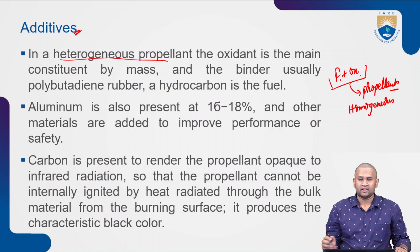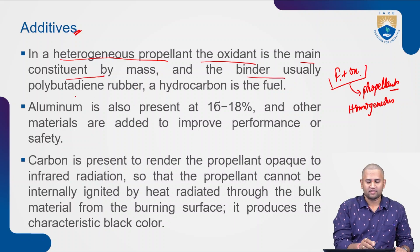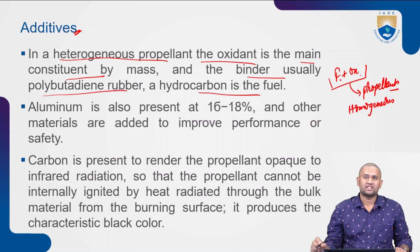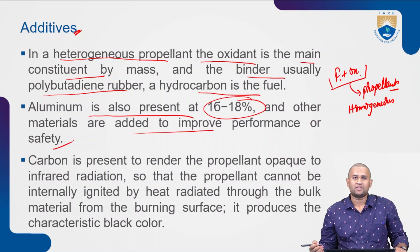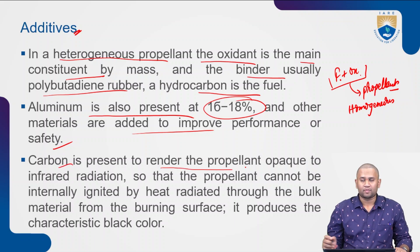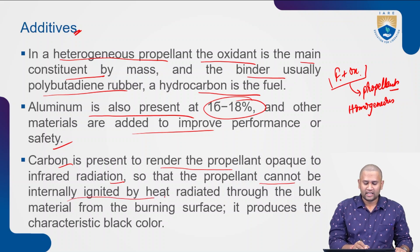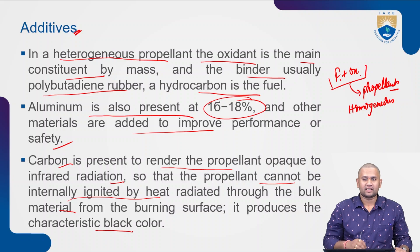In the case of a heterogeneous propellant, the oxidant is the main constituent by mass, and a binder — which is usually polybutadiene rubber — and a hydrocarbon which is a fuel. Aluminum is also present at 16 to 18%, and other materials are added to improve performance or safety. Carbon is present to render the propellant opaque to infrared radiation so that the propellant cannot be internally ignited by heat radiated through the bulk material of the burning surface. It produces a characteristic black color.